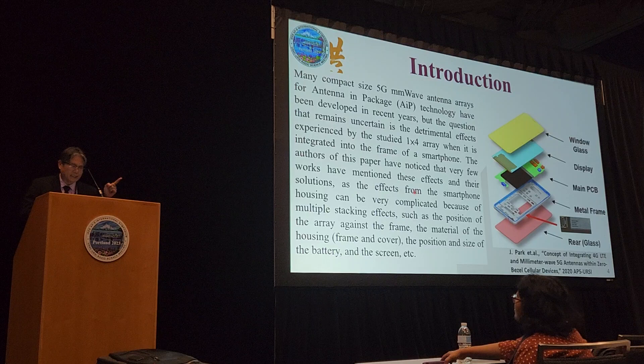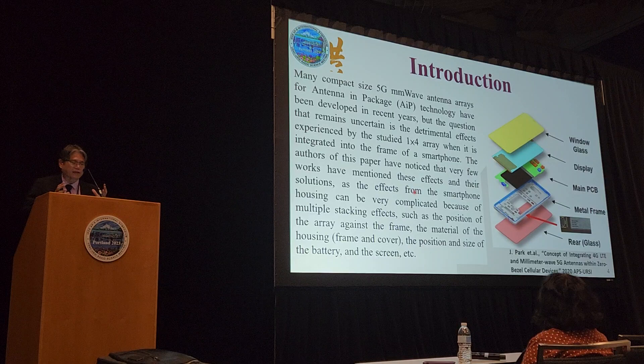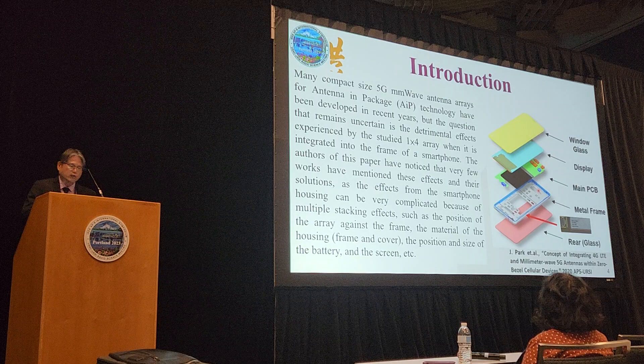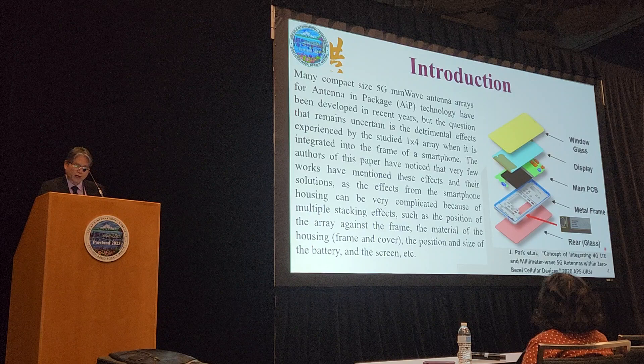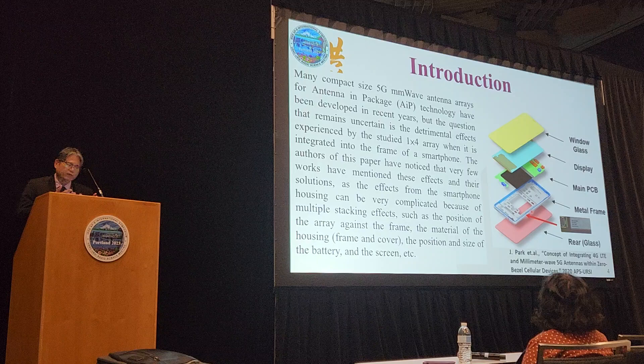We realized that many compact-size millimeter wave antenna arrays, especially for AIP technology, have been developed. But the question still remains — what the reviewer asked — about the detrimental effects experienced by the 1x4 antenna array. If you look at an actual smartphone, you can see there are lots of other components such as the window, the display, the PCB, the batteries, and the rear glass. If I try to put my AIP somewhere at the side of the smartphone, we should be able to see that there is an effect on that.